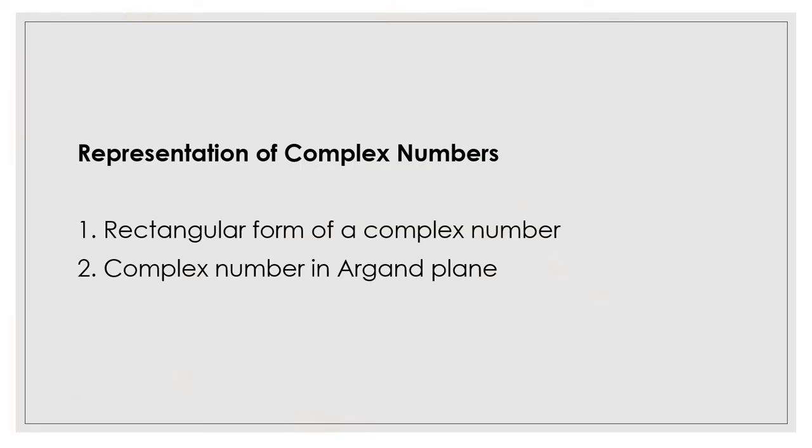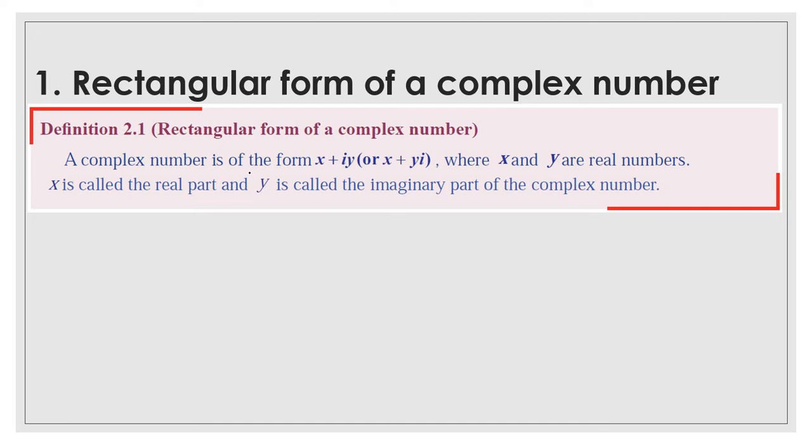Representation of complex numbers. There are two ways by which a complex number may be represented: one by rectangular form, and the second one, the complex number will be represented in an argand plane. First one: rectangular form of a complex number. A complex number is of the form x plus iy.